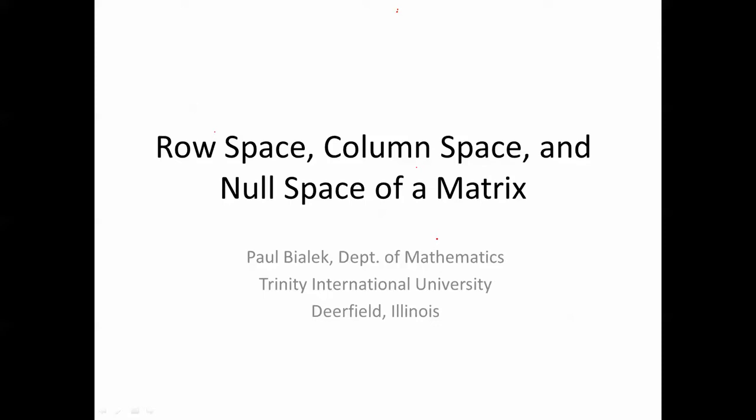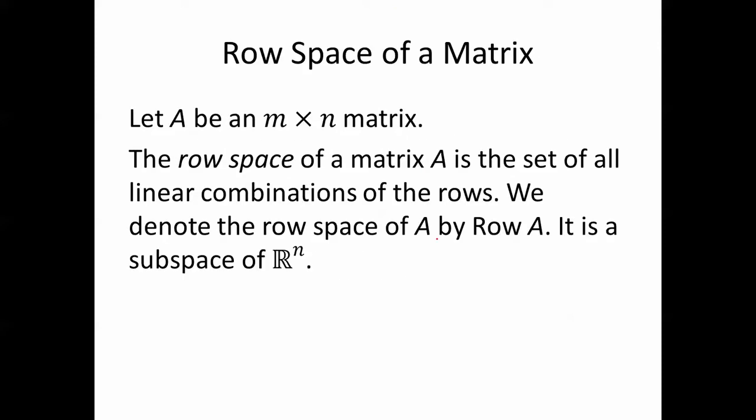Let's look at the row space, column space, and null space of a matrix. Let A be an m by n matrix. The row space of the matrix A is the set of all linear combinations of the rows. We denote the row space of A by row A. It is the subspace of R^n. Notice it's R^n because A is an m by n matrix — A has n columns, which means that each row has n entries.